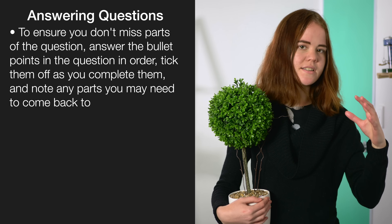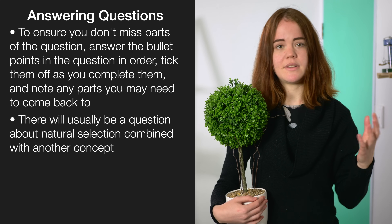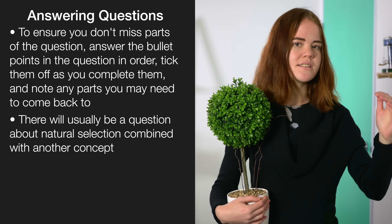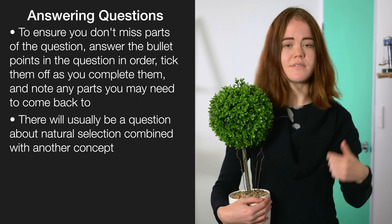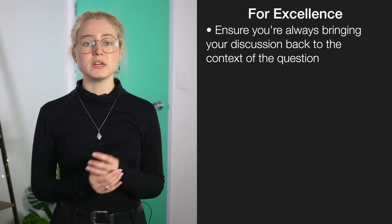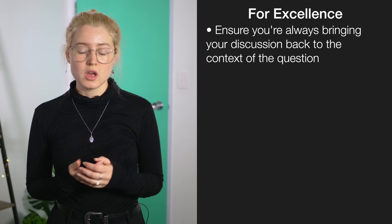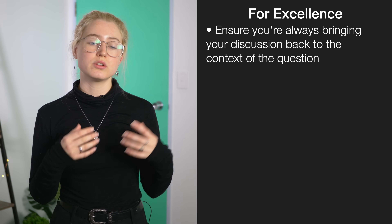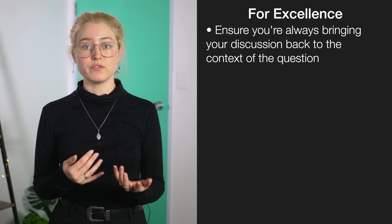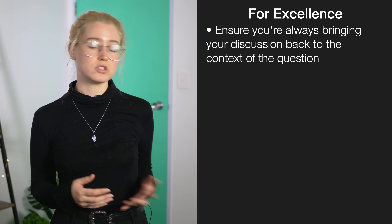One of the questions about genetic variation on a population level is usually about natural selection, but it won't just be about natural selection — it's usually combined with some other concepts. For example, in the 2016 exam it was combined with the effect of mutations, and in the 2017 exam you're asked to talk about the effects of natural selection, mutation and migration altogether on a population. One of our last tips for getting excellence is to make sure that you're always bringing your discussion back to the context of the question. It's not enough to say something like 'the population's genetic diversity was reduced due to the founder effect.' What you need to be saying is 'the current population on the big South Cape Island has a low genetic diversity due to the founder effect' — the difference being that you're including the context of the question in your answer.